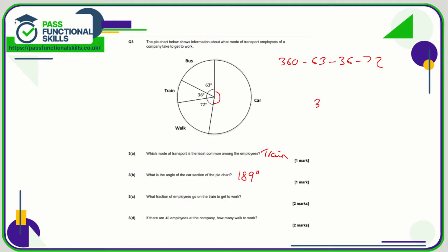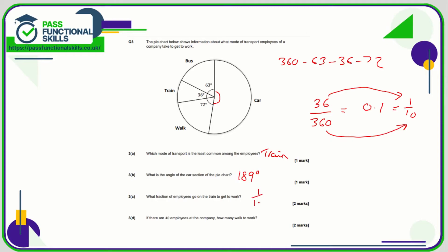What fraction of employees go by train to work? That is 36 degrees out of 360. You can do 36 divided by 360 on your calculator and get 0.1, which is 1/10. Or simplify the fraction: both top and bottom can be divided by 36. 36 divided by 36 is 1, and 360 divided by 36 is 10, so the answer is 1/10.